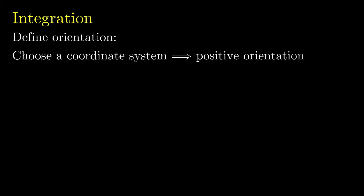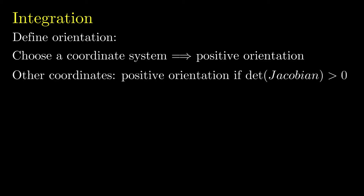Now let's turn to the topic of integration. First, we define orientation. An orientation on the manifold can be defined by choosing a particular coordinate system and declaring that coordinate system to have positive orientation. In the language of three-dimensional spaces, we would call such a coordinate system right-handed. Any other coordinate system has positive orientation if it's related to the original coordinates by a transformation with a positive Jacobian determinant.